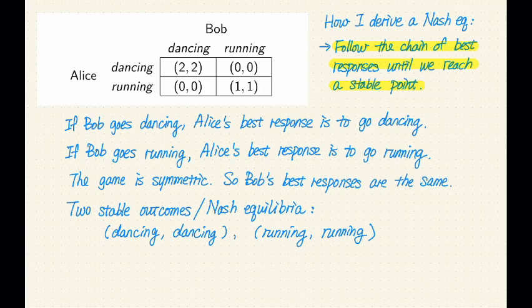So this is what I mean. Let's consider our game and start with an arbitrary outcome. We have four outcomes. So let's randomly pick one, say let's start with dancing and running. And once we start with the outcome, we can pick either player and try to verify is that player currently playing a best response to the other players.